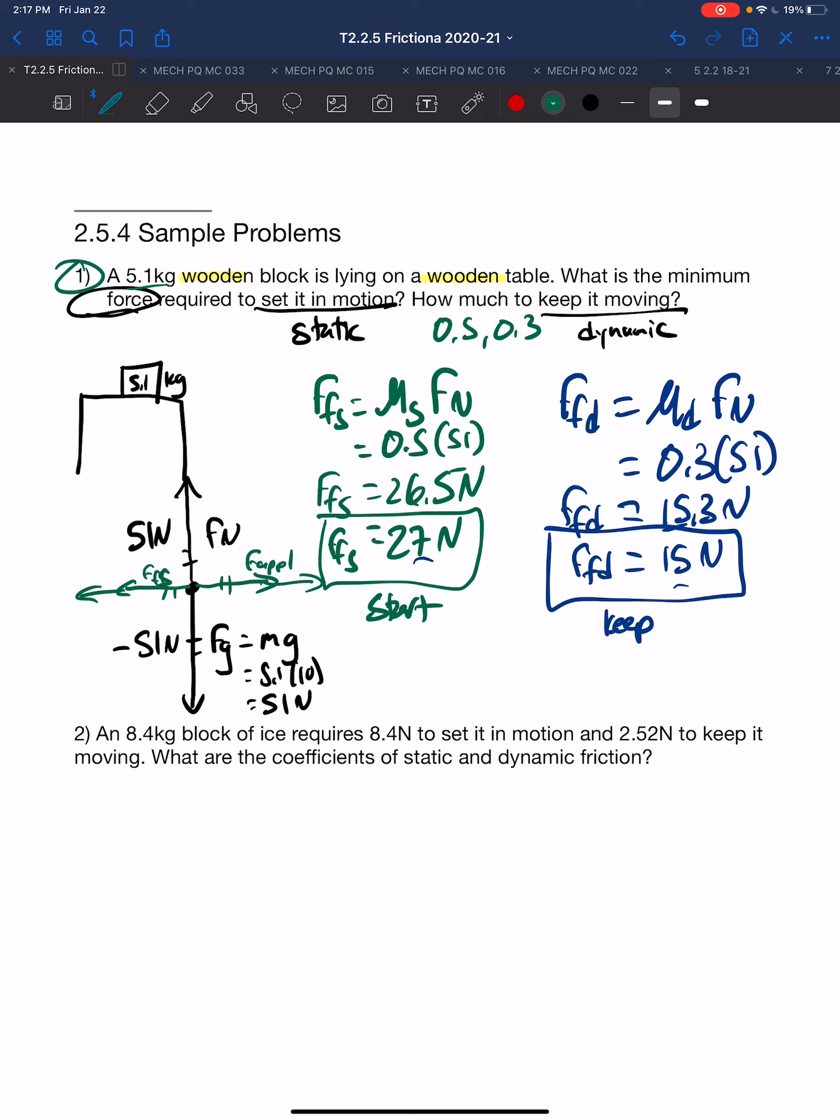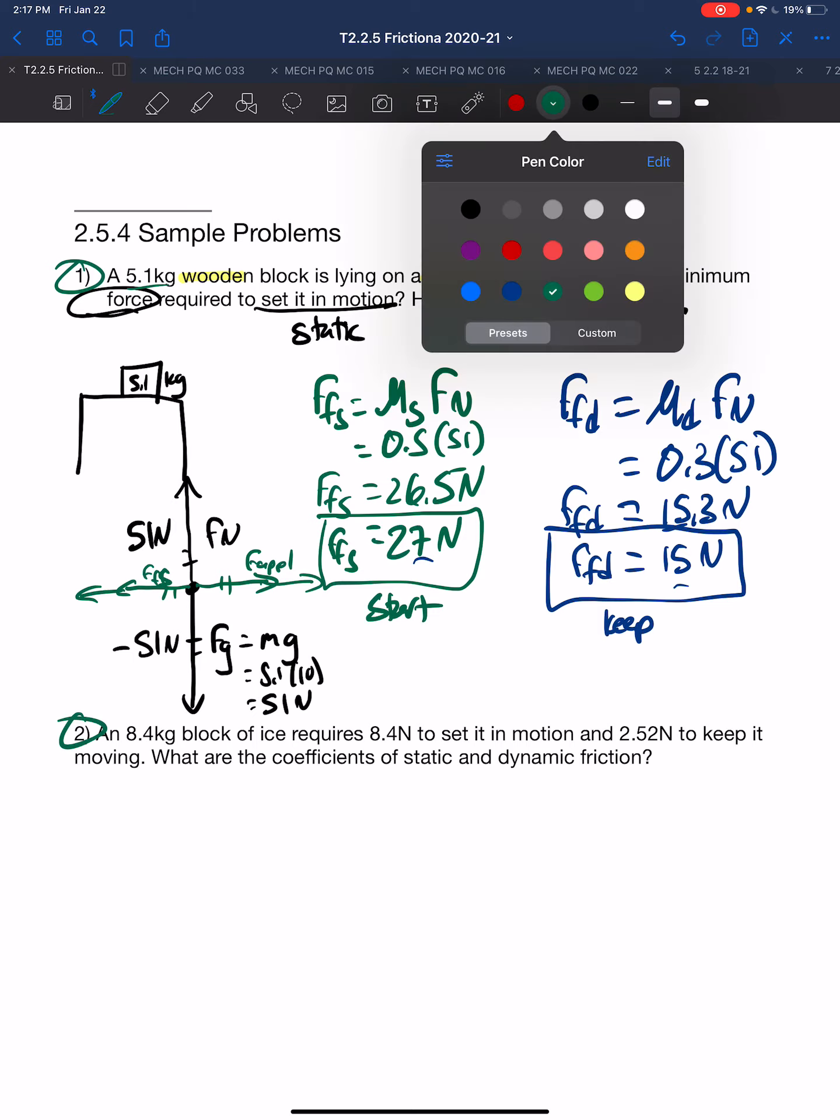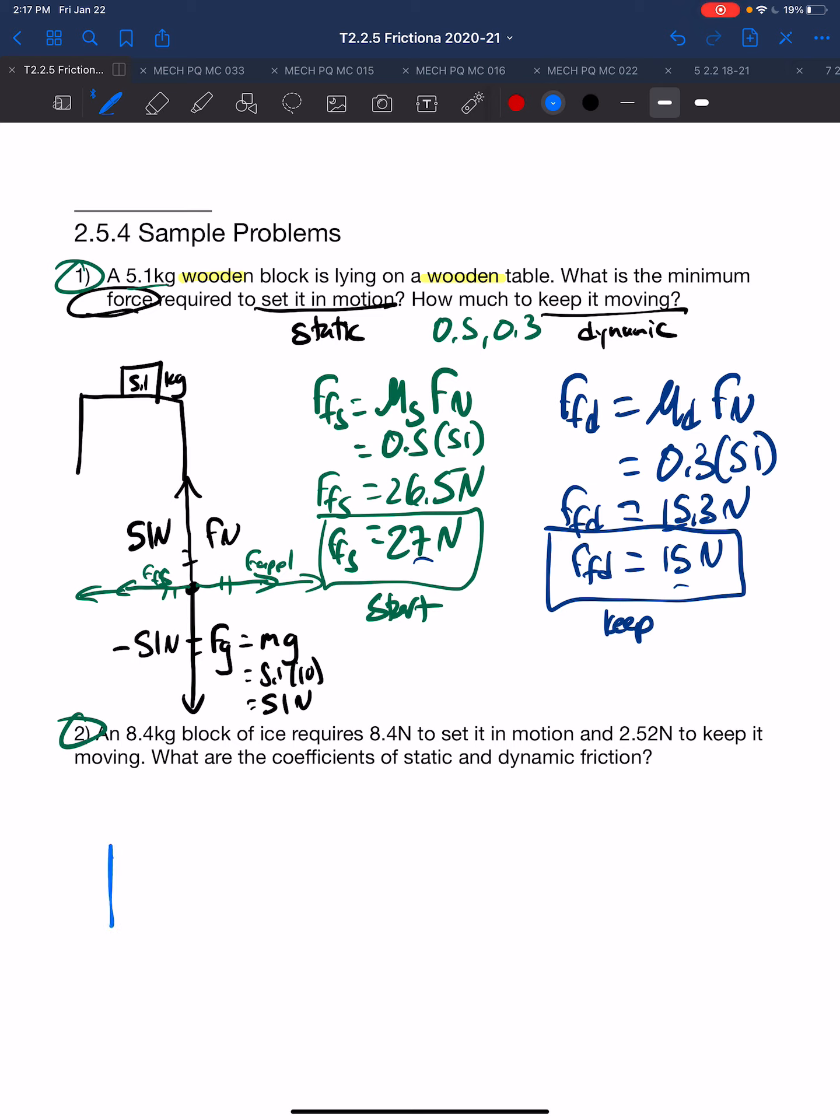The second problem we have is where we have a block of ice, an 8.4 kilogram block of ice. 8.4 newtons to set it in motion, so to set it in motion means that's about static. And 2.52 to keep it going, that's dynamic. We want the coefficients of static and dynamic friction.